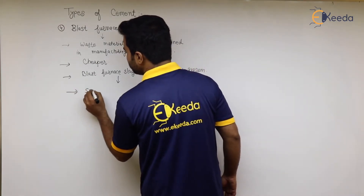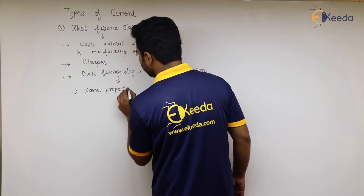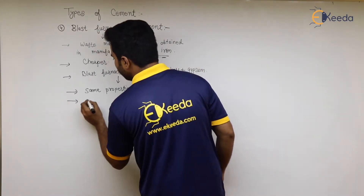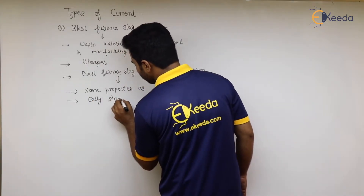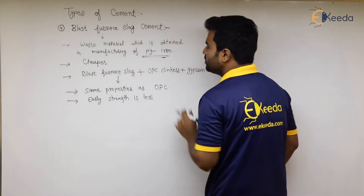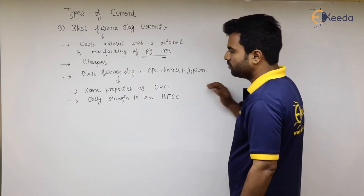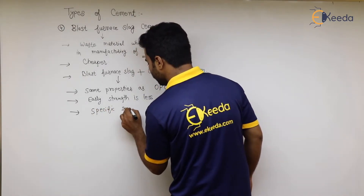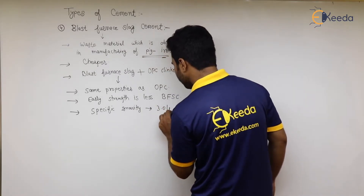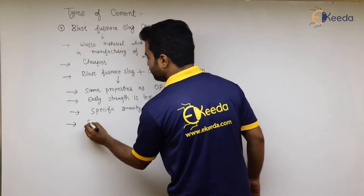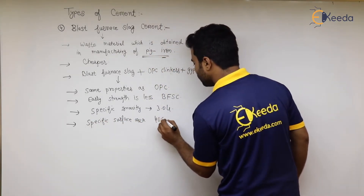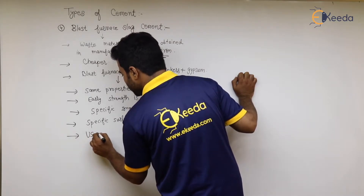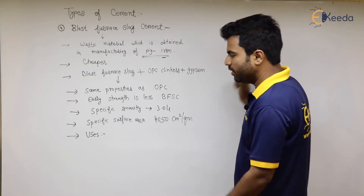Blast furnace slag cement has generally the same properties as OPC, except that its early strength is lower. Its specific surface area is greater than 4050 cm²/g. It can also be used in places where sulfate resisting cement is applicable.